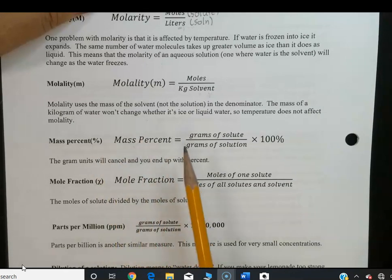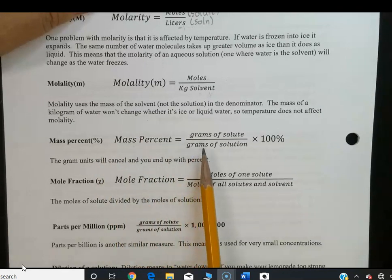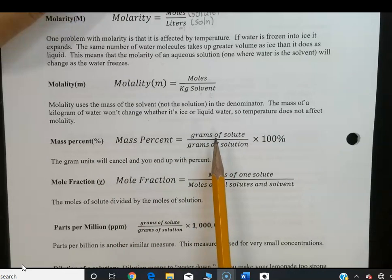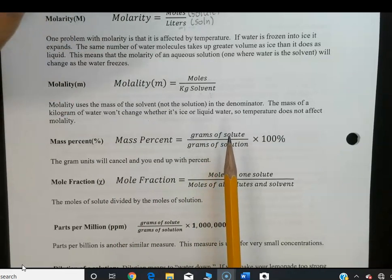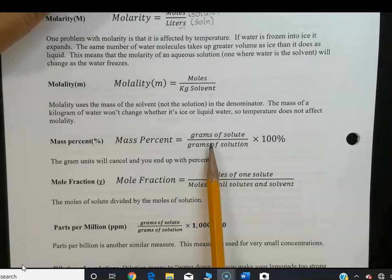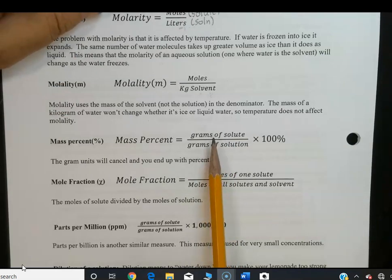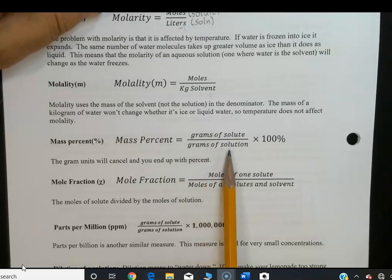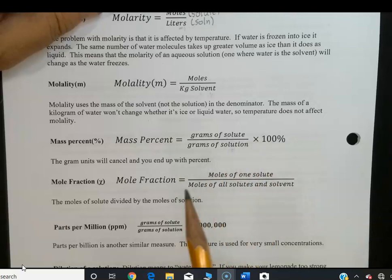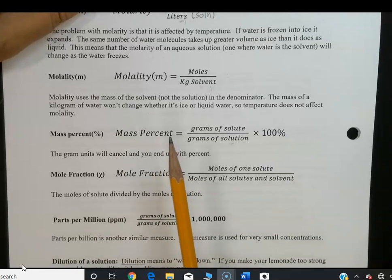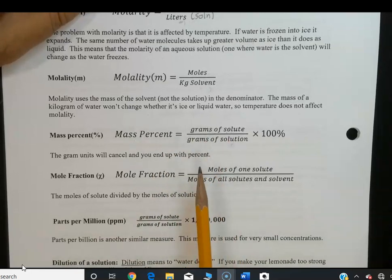Mass percent is grams of solute over grams of solution — be sure it's solution, not solvent — times 100%. That gives you the mass percent of the solute in the solution.